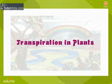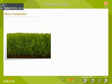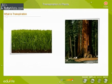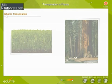Transpiration in Plants. All plants, from the smallest weed to the tallest tree, which is several meters tall, need water. Plants are not mobile. How do they manage to get water right up to the tallest branch?